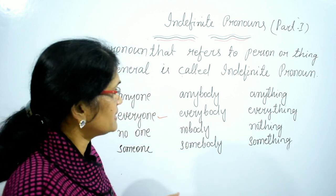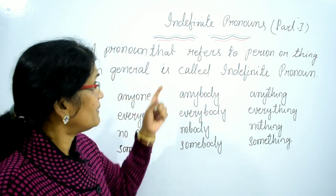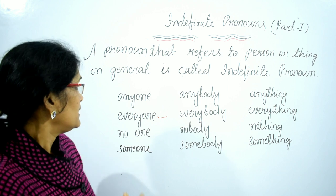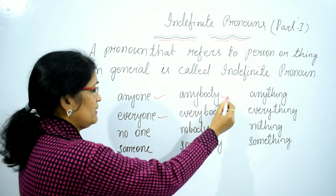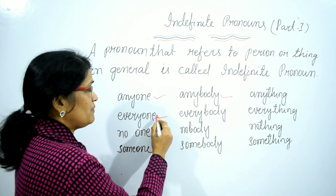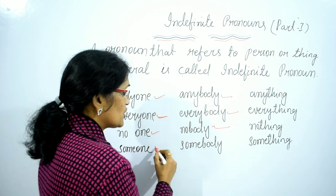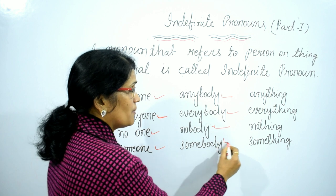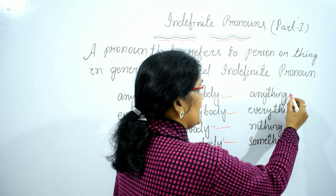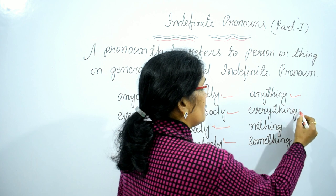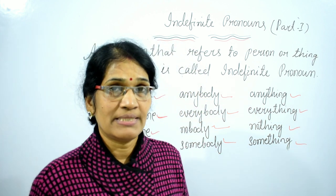I have represented only 12 words of indefinite pronouns. From those, 8 words — Anyone, Anybody, Everyone, Everybody, No one, Nobody, Someone, Somebody — are used for persons. And Anything, Everything, Nothing, Something are used for things.